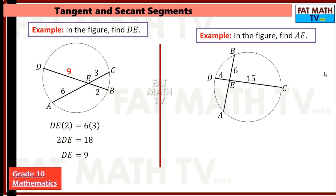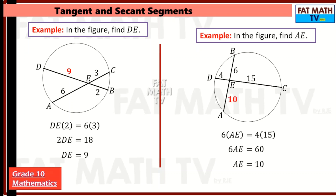Another example: two intersecting chords CD and AB intersect at E. DE equals 4, EC equals 15, and BE equals 6. What is the length of AE? The product of 4 and 15 must equal the product of 6 and AE. So 6 times AE equals 60, and AE equals 10 units. Check: 6 times 10 is 60, and 4 times 15 is also 60.